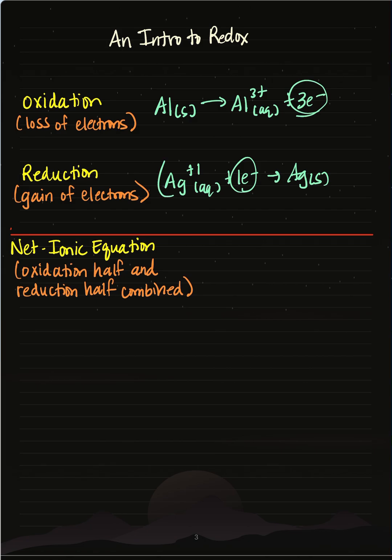So what I'm going to do is take my silver half reaction and multiply this by three. That will give me three Ag+, plus three electrons produces three silver solids.